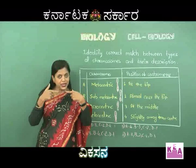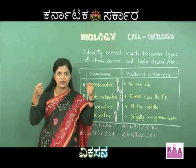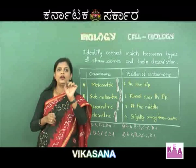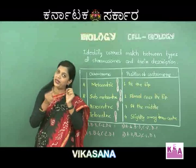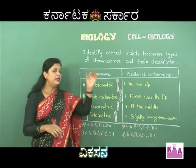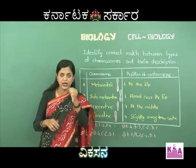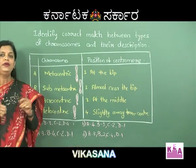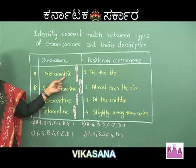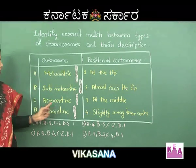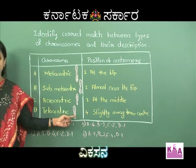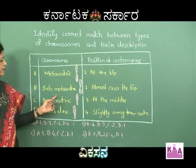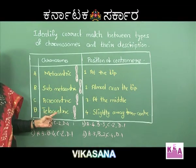The chromosome is a very important organelle of the cell which contains DNA. The centromere position determines the chromosome type. Now we will study different types of chromosomes: metacentric, sub-metacentric, acrocentric, and telocentric. The centromere position differs in each type.